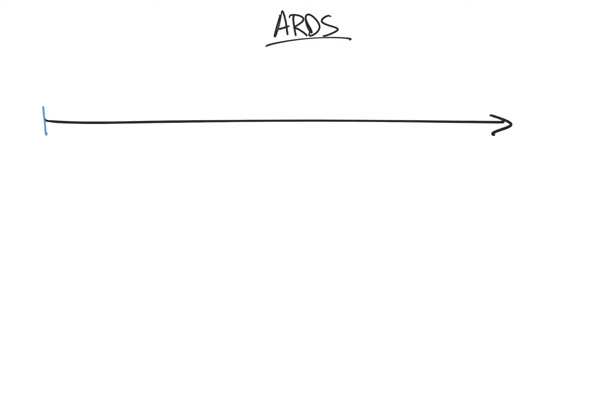This arrow represents both the patient's ARDS course and the timeline for four landmark trials. First, let's talk about diagnosis.